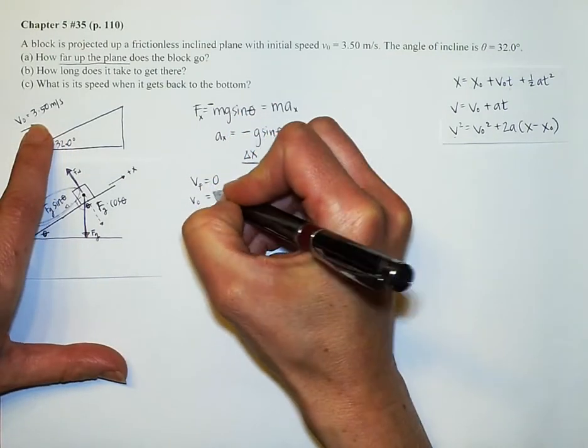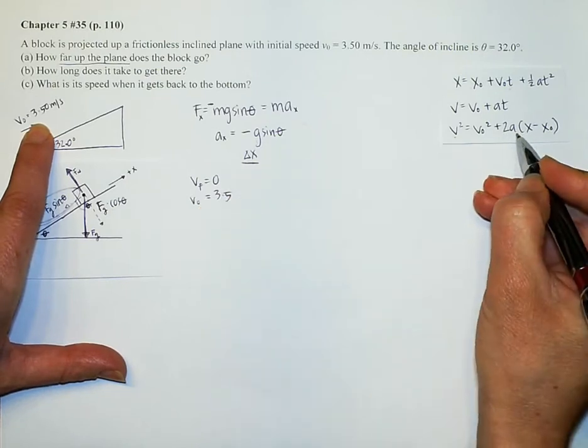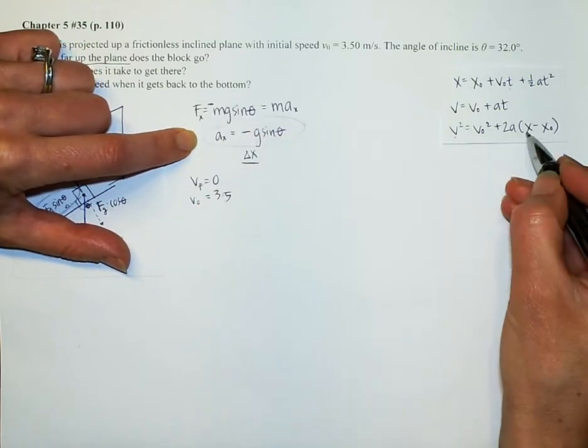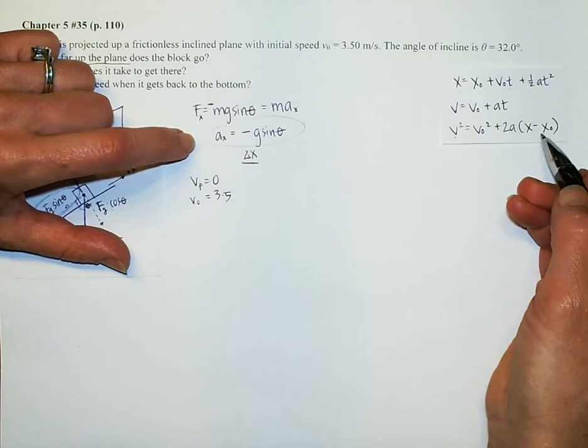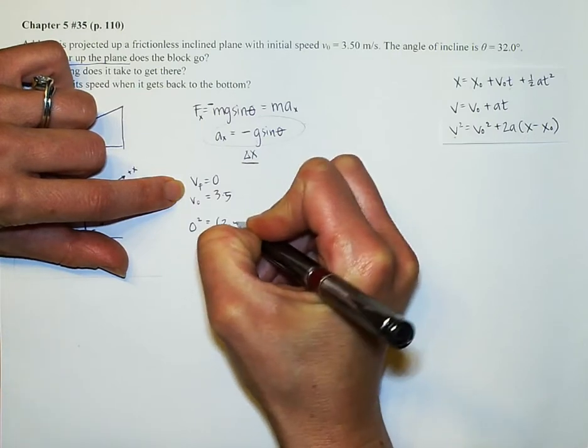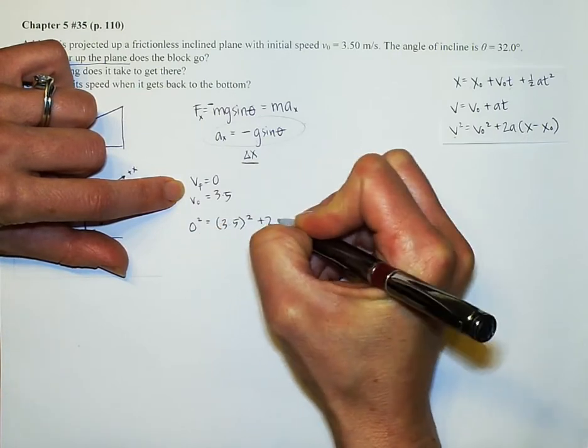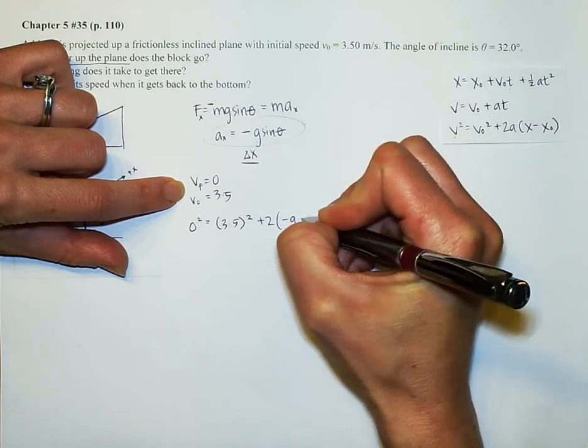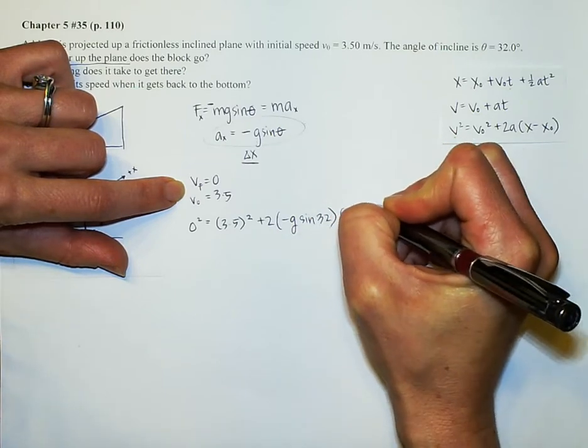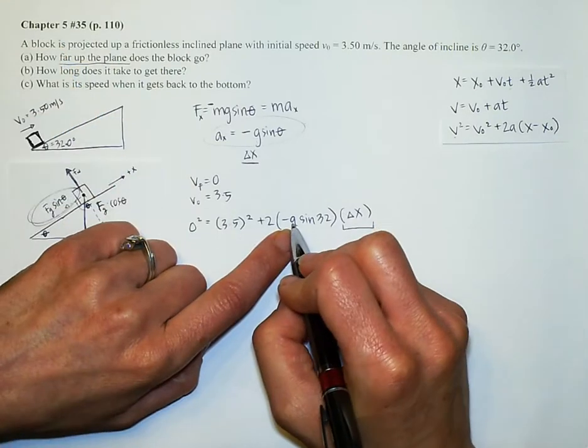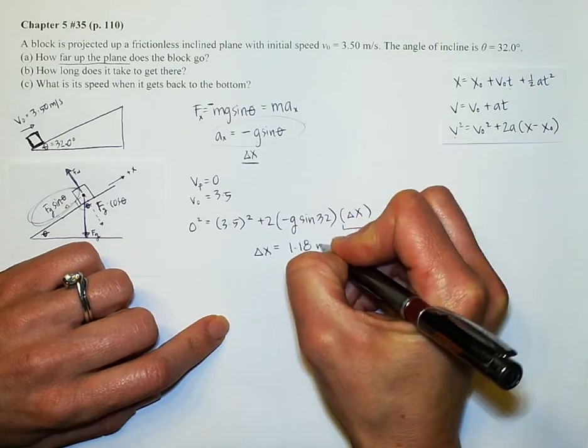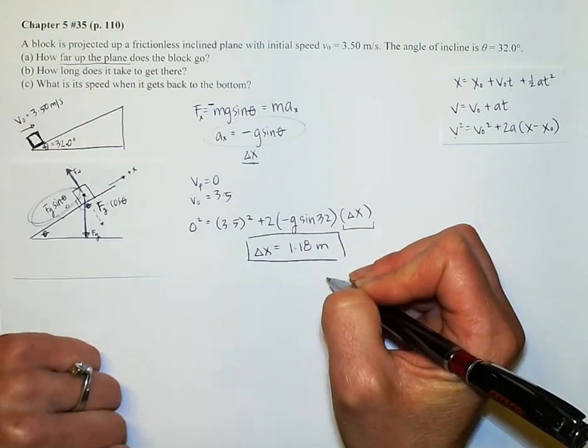My initial velocity, as we know, is 3.5. My acceleration is not gravity, it's negative g sine theta. So we already have that right there. And then our change in x is what we're looking for. So bingo, this one's going to work great. Let's plug it in. I have zero squared equals 3.5 squared plus 2 times negative g sine 32 times my delta x. This is what I'm solving for. We'll plug in 9.8 for that g right there. And we will find out that our change in x is 1.18 meters. That is how far up the block goes up the incline.